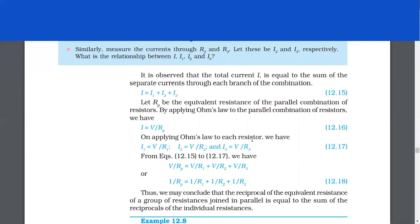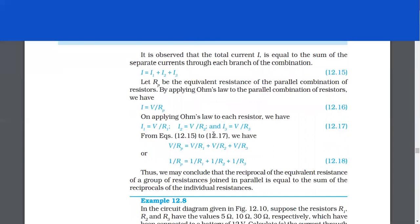Let Rp be the equivalent resistance of the parallel combination of resistors. By applying Ohm's law to the parallel combination: I = V/Rp. Applying Ohm's law to each resistor: I1 = V/R1, I2 = V/R2, and I3 = V/R3. So V/Rp = V/R1 + V/R2 + V/R3, therefore 1/Rp = 1/R1 + 1/R2 + 1/R3. Thus we may conclude that the reciprocal of the equivalent resistance of a group of resistances joined in parallel is equal to the sum of the reciprocals of the individual resistances.